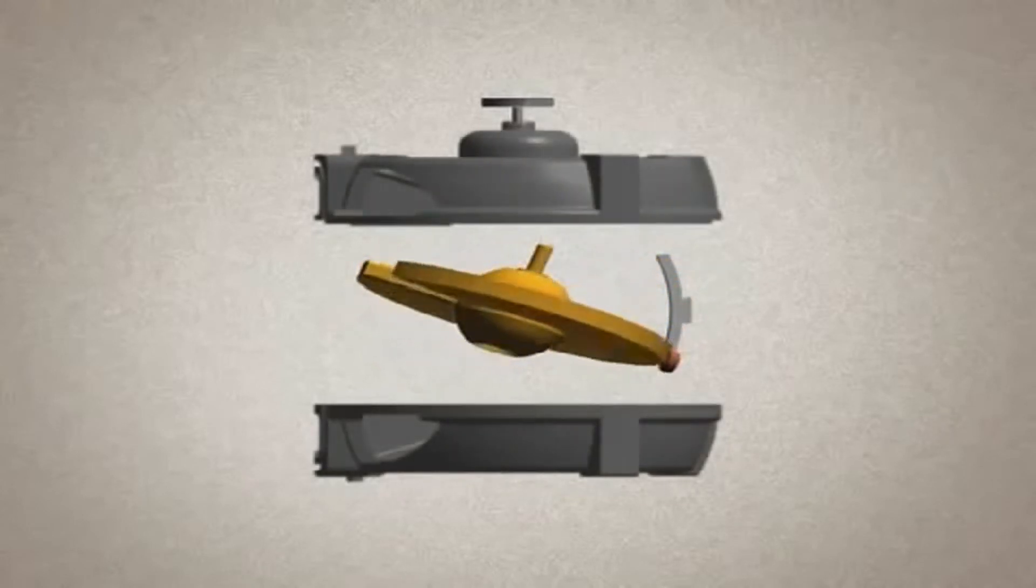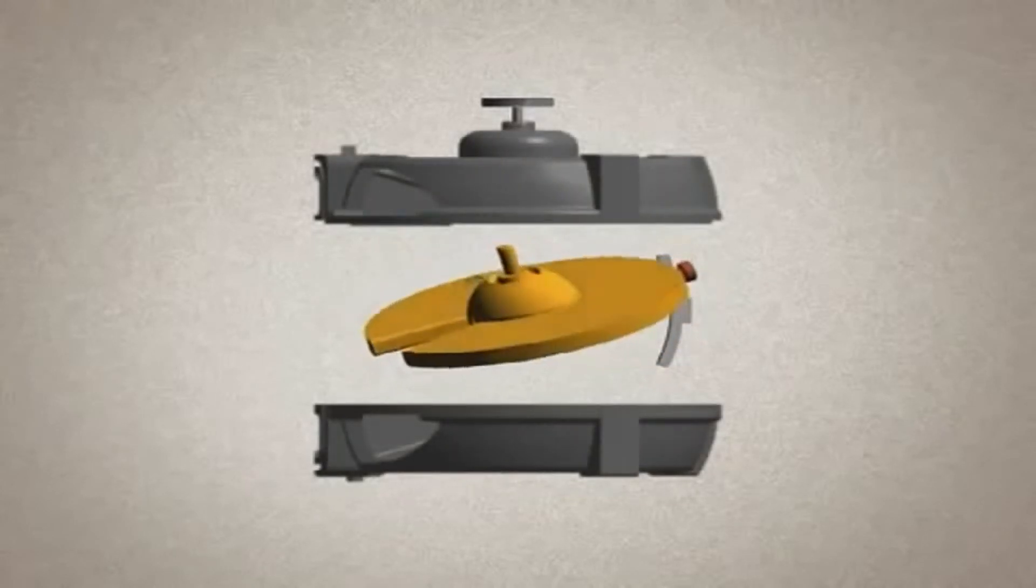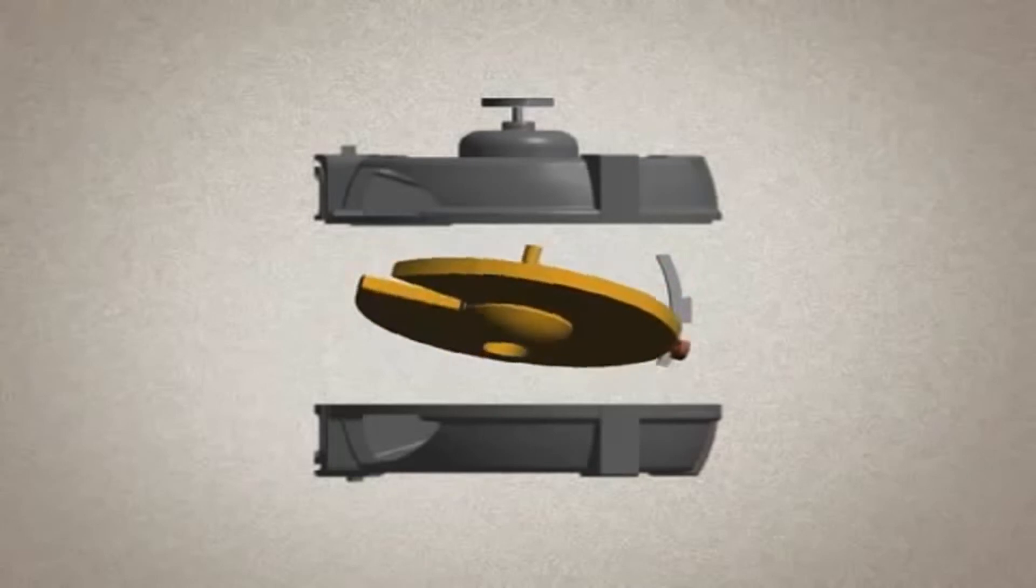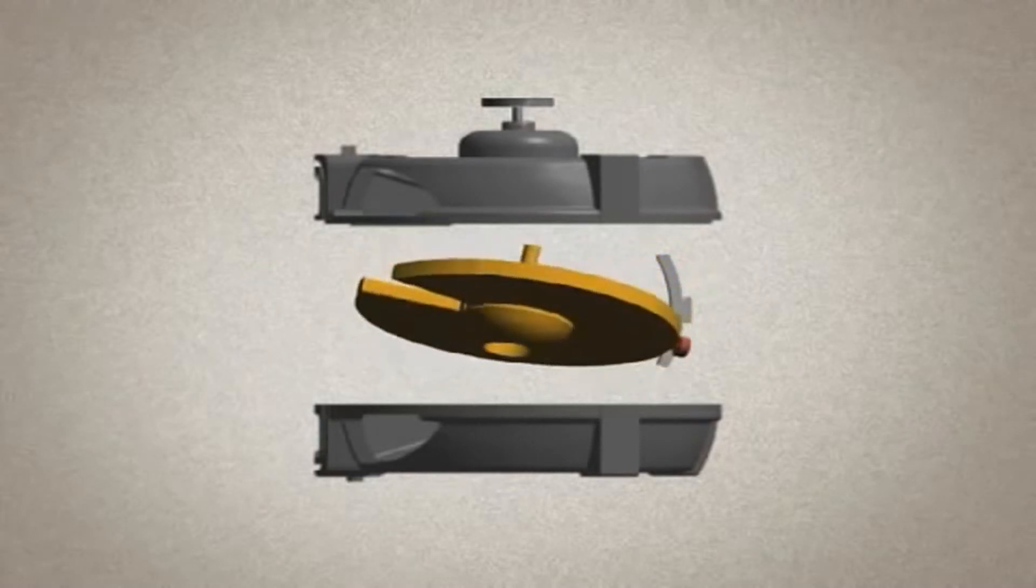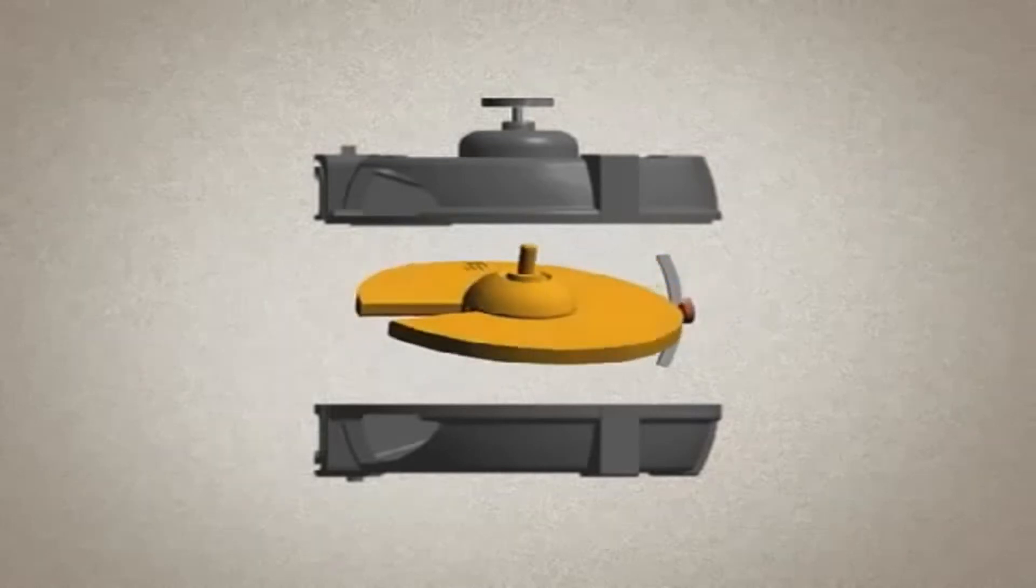As the water flows into the measuring chamber, it causes the disc to nutate, a motion similar to a coin dropped on a table. Notice that the disc does not rotate, but rather wobbles on its axis.